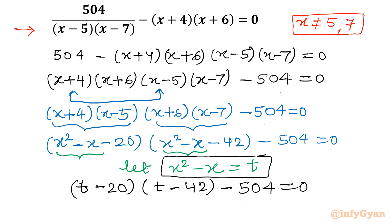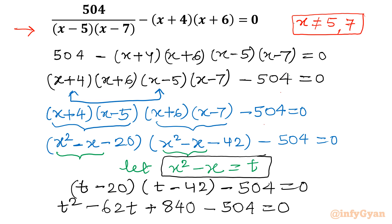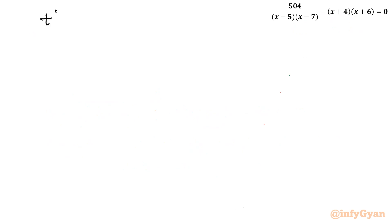Let us expand: t² minus 42t minus 20t, so minus 62t, plus (minus 20)(minus 42) which is plus 840, minus 504 equal to 0. Now 840 minus 504 is 336. So the equation becomes t² minus 62t plus 336 equal to 0.